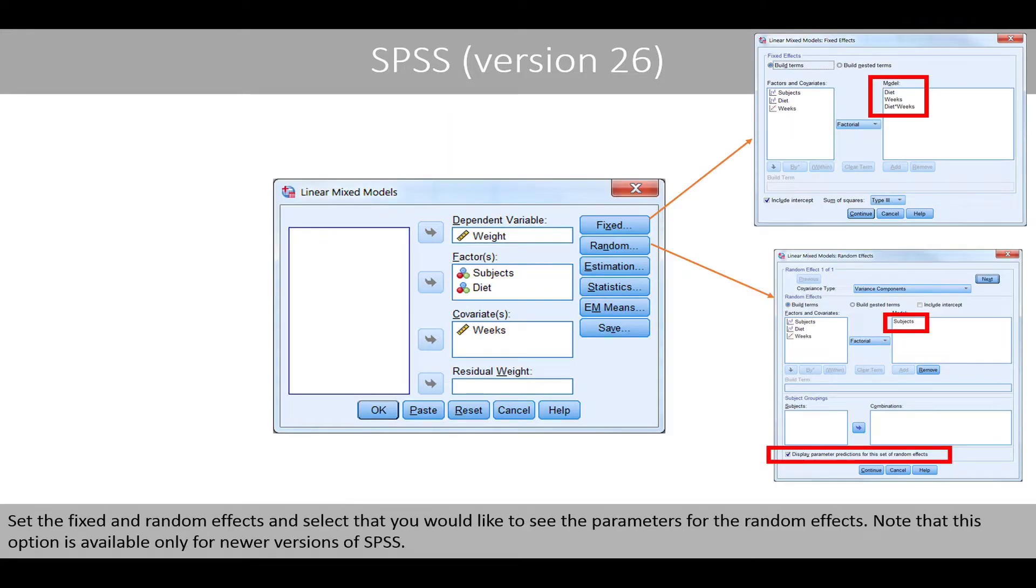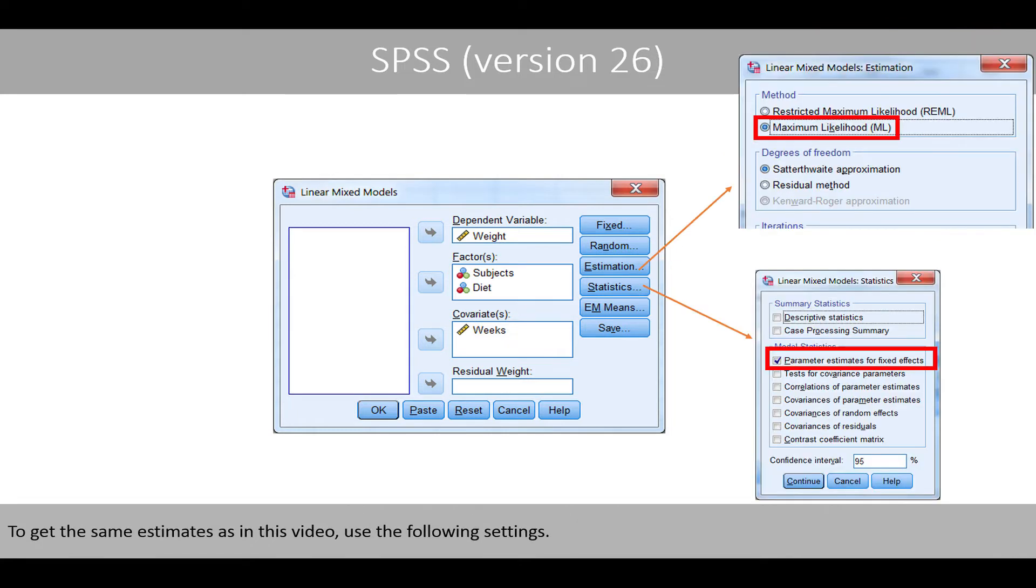Set the fixed and random effects, and select that you would like to see the parameters for the random effects. Note that this option is available only for newer versions of SPSS. To get the same estimates as in this video, use the following settings.